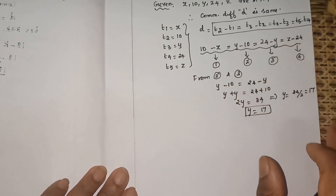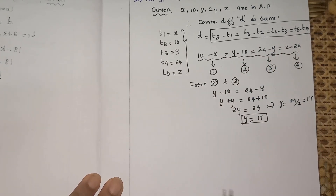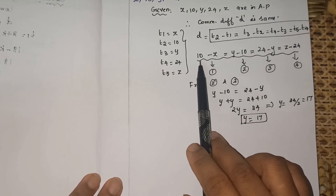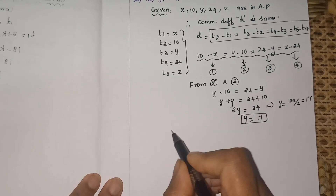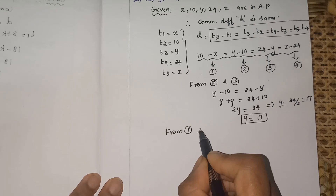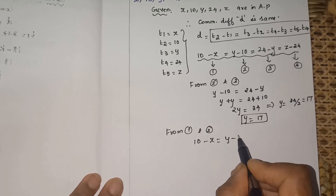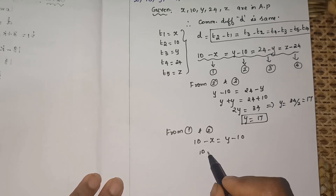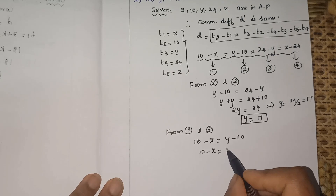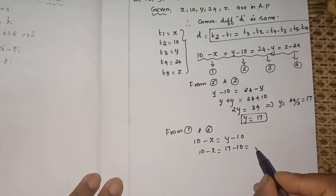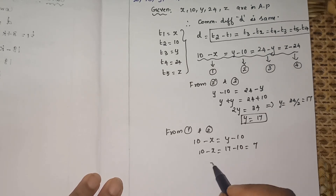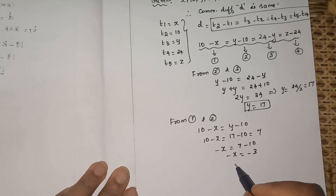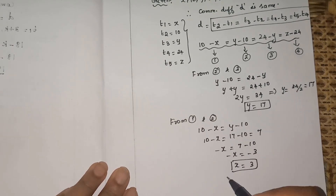Next, we use equations (1) and (2) to find x, since we now know y. Setting 10 minus x equal to y minus 10: 10 minus x equals 17 minus 10, which is 7. So minus x equals 7 minus 10, giving minus x equals minus 3, therefore x equals 3.